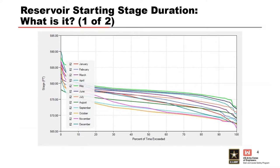Most of us are familiar with flow or stage duration exceedance curves — an example is shown right here. This represents the percent of time the reservoir stage is above a given stage. Duration curves are typically calculated for seasonal, monthly, or annual time periods. Here, we're trying to find the monthly reservoir starting stage duration, which is what RMC RFA uses — it's used to sample the initial stage for reservoir routing based on the sampled month in which the flood event occurs.